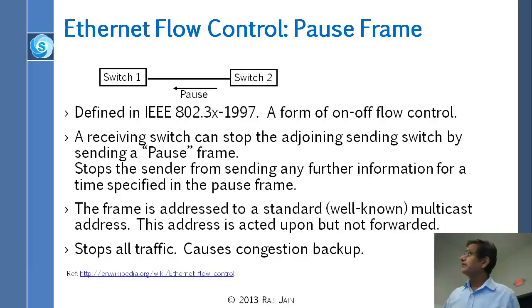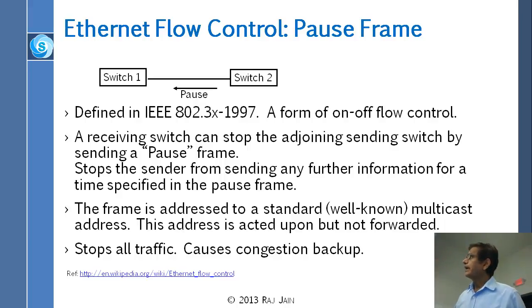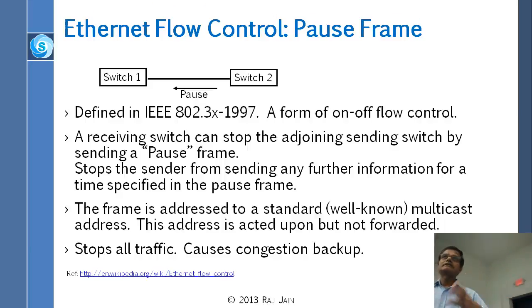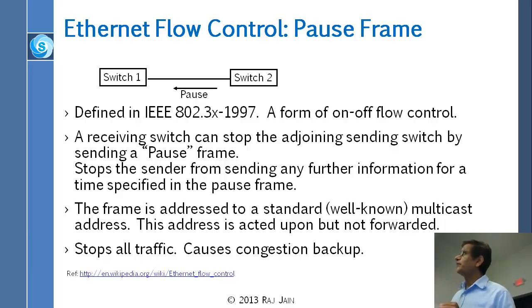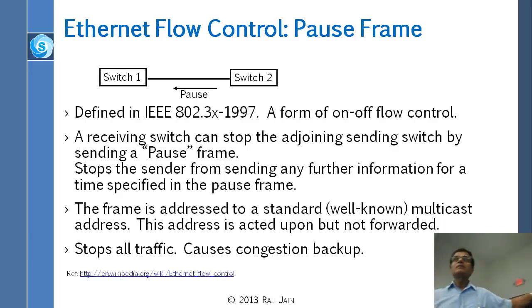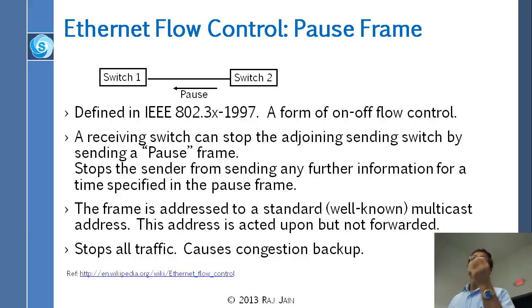This was defined in 1997. This is what we call on-off flow control — you can turn on the flow, you can turn off the flow. The pause frame is not a unicast frame; you send a broadcast frame. Since it's a multicast address, anybody who listens to that multicast address will act on it. This pause frame, even though it is a multicast frame, is not forwarded. The main problem is it stops all traffic, and therefore a back pressure builds up — congestion in one place blocks all traffic everywhere.